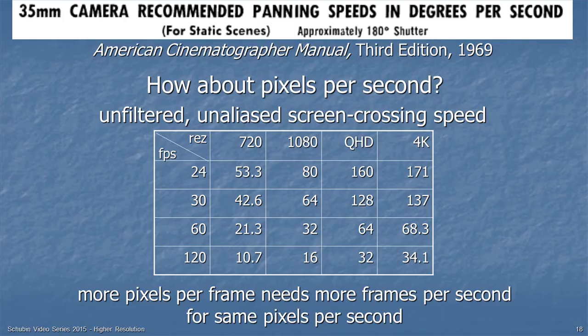The heading of a chart in the American Cinematographer Manual talks about recommended panning speeds in degrees per second. But why not call it pixels per second? Because there are a certain number of pixels as you pan across — and the more pixels you have per frame, the more frames per second you need to get the same number of pixels per second. So going to a higher spatial resolution kind of demands a higher frame rate for the same results.